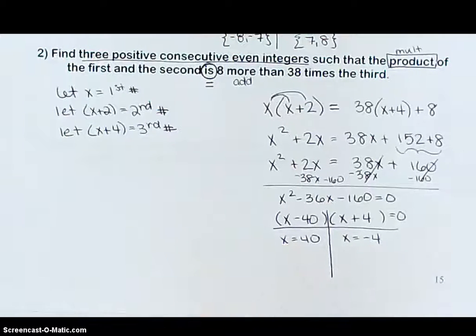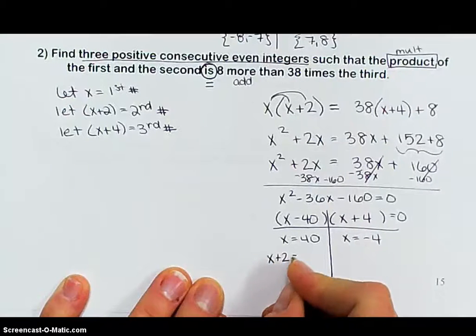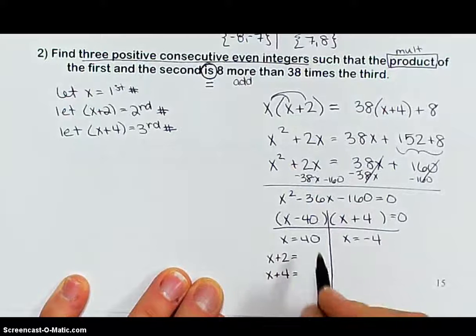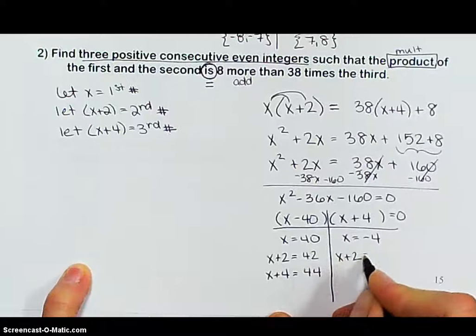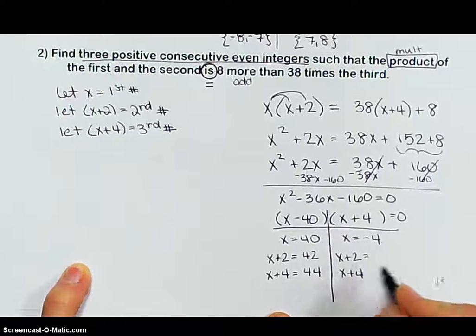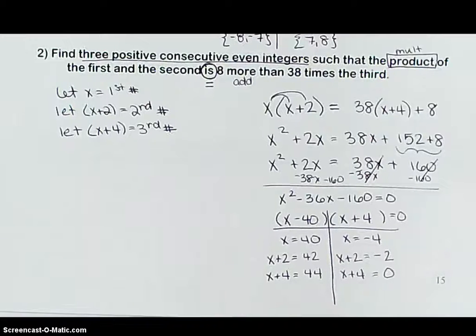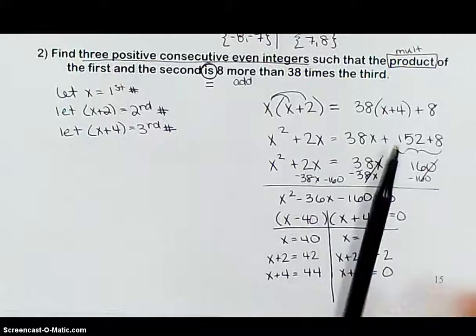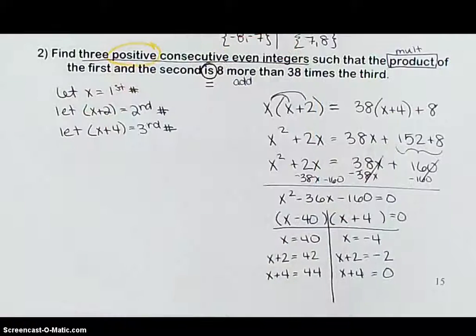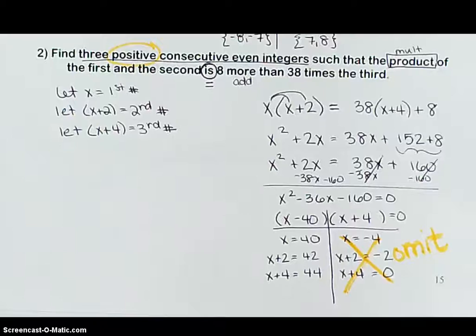Now we find all three numbers for each solution. For x equals 40: the three integers are 40, 42, and 44. For x equals negative 4: the integers are negative 4, negative 2, and 0. However, the problem asks for positive integers, so we omit the negative set. The answer is 40, 42, and 44.